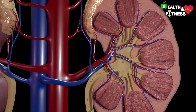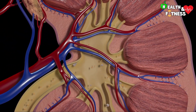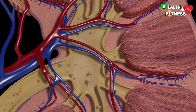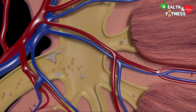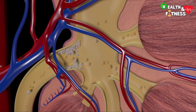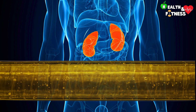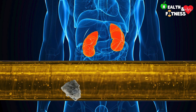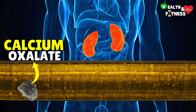Kidney stones are small pebbles that form in the urinary tract when the substances in the urine become too concentrated. These are formations of a rather hard consistency, made up of the aggregation of some mineral salts normally present in urine, and in most cases are formed by calcium oxalate.